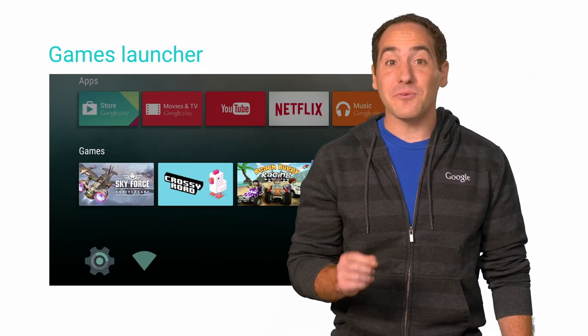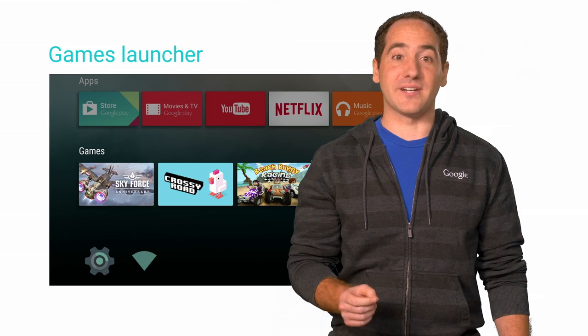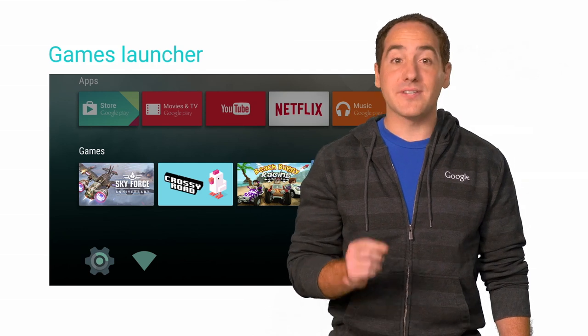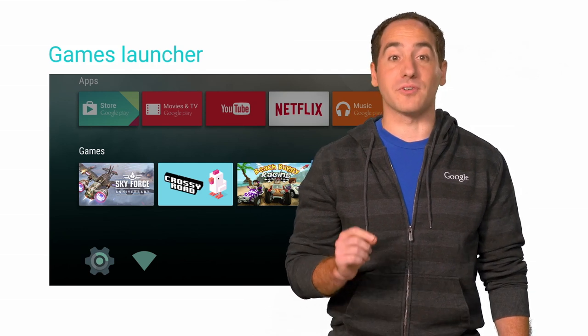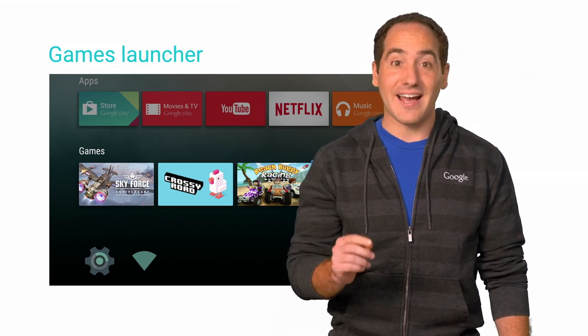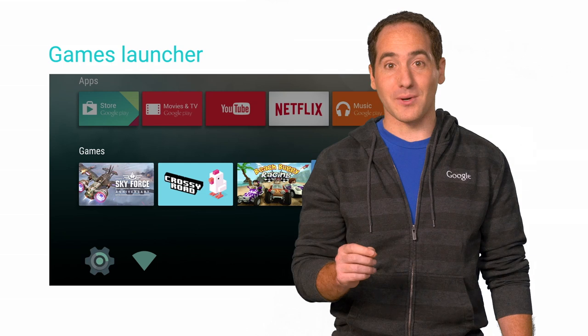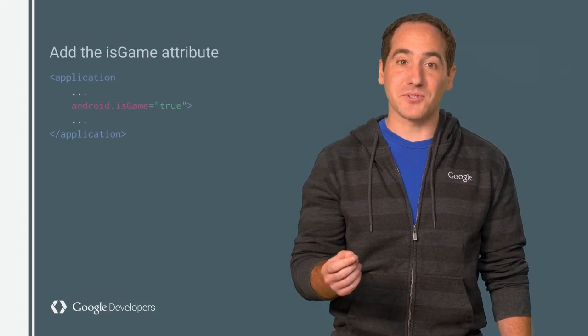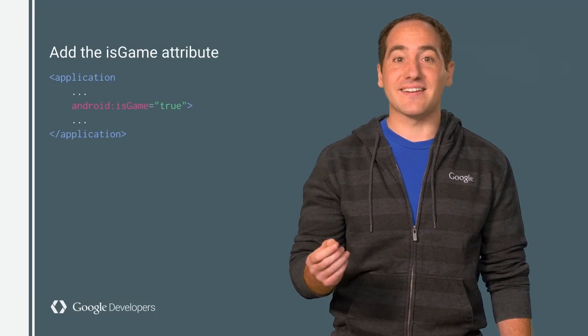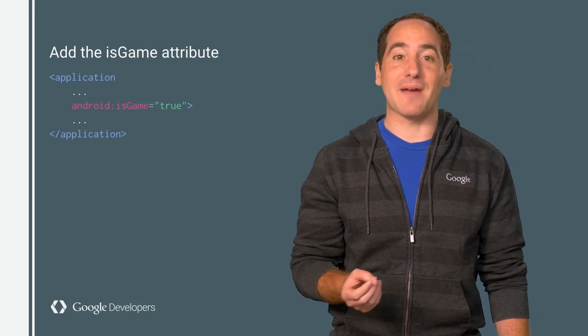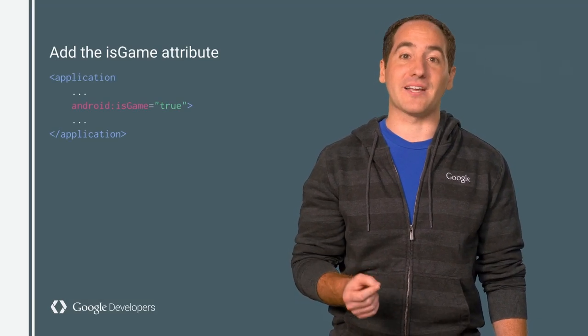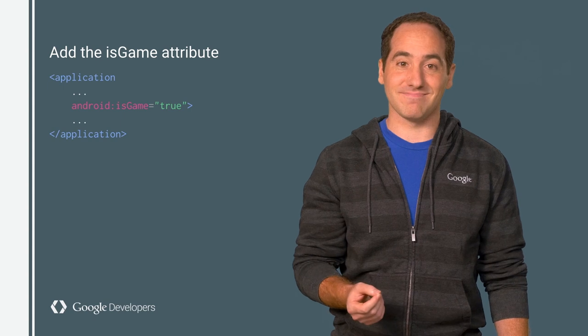Next, notice that the Android TV home screen uses a separate launcher row for games, and you'll want to make sure your game is shown here when it's installed. To do so, just add an AndroidIsGame attribute to your application element.